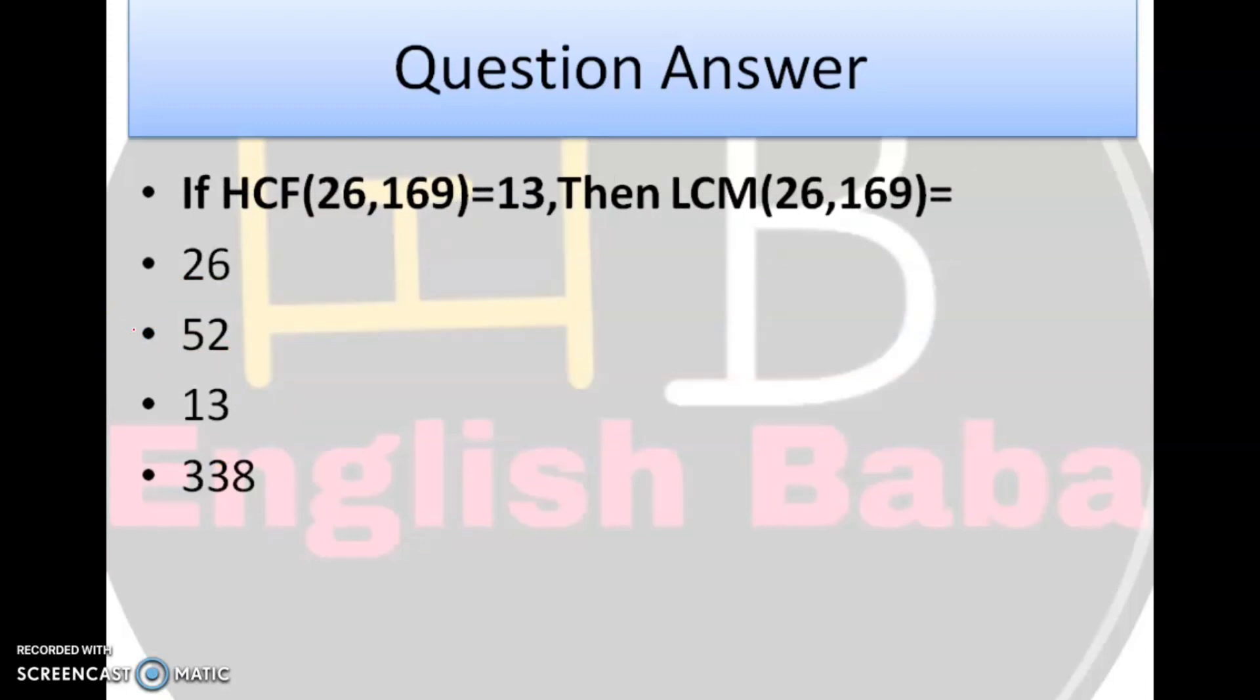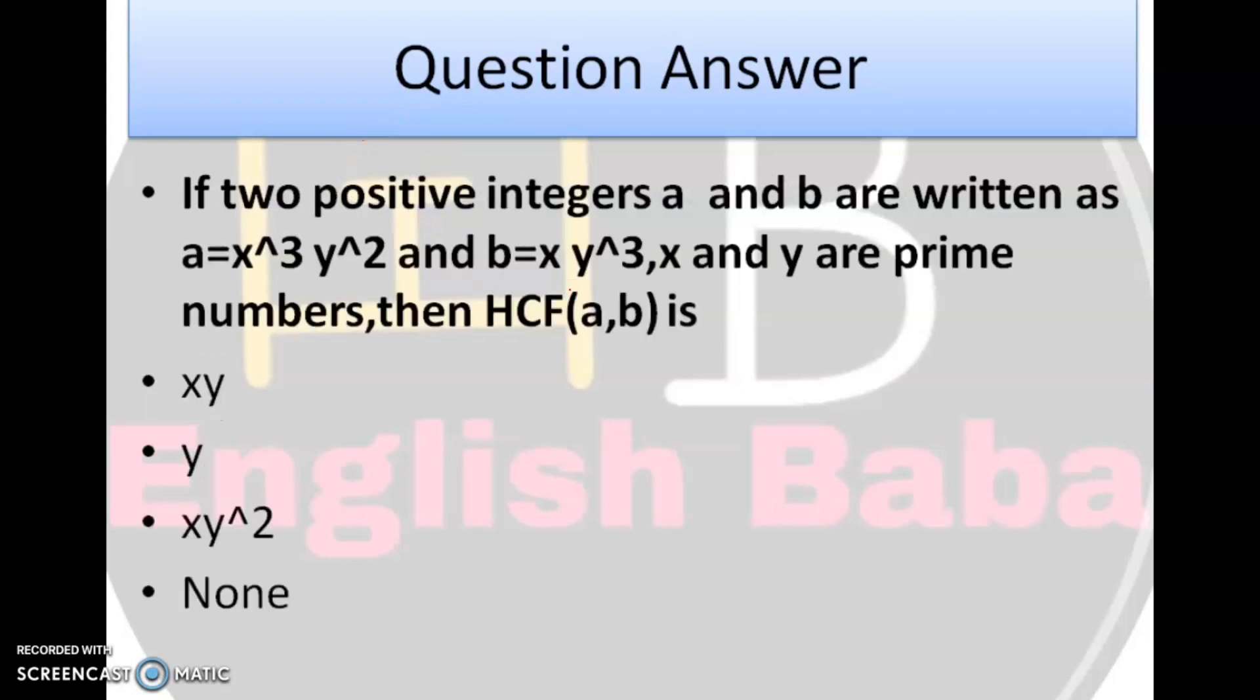Next question. If HCF of 26, 169 is 13, then LCM of 26, 169 would be what? Hamei kya diya hoa hai? HCF diya hoa hai, 13. A ki value di hoi hai, 26. B ki value di hoi hai, 169. Hamei pata hai, HCF into LCM is A into B. You will solve the quadratic equation and you will get the answer as, solve it fast. LCM will be 26 into 169. The whole divided by 13 is equal to 338.